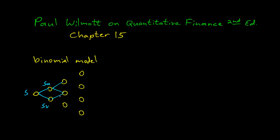After another time step it can go up or down again. If it goes up again you'll get su squared, or suv because it went up then down. Here it can go down then up and you also get suv. From sv you'll get sv squared if you go down again. And you just keep doing this, making the lattice bigger. So you get su cubed, su squared v, suv squared, sv cubed.